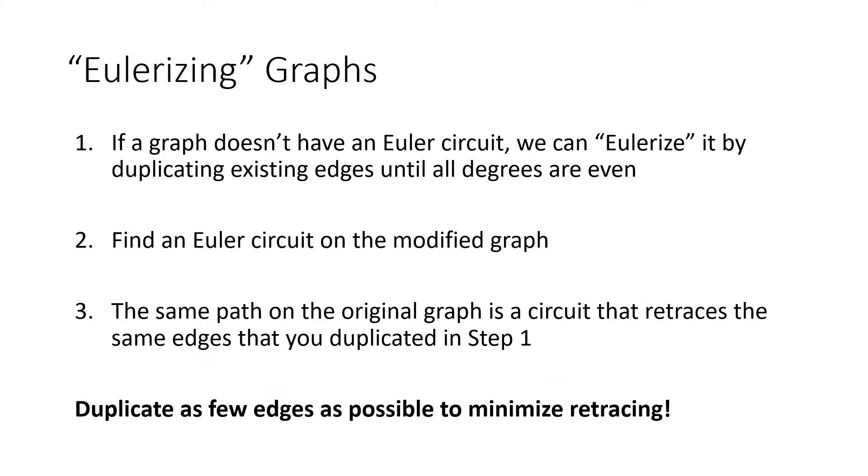So here's the basic process for what I call Eulerizing graphs. If a graph doesn't have an Euler circuit, in other words if it has at least one vertex with an odd degree, we're going to Eulerize it by duplicating existing edges until all of the degrees are even. That new graph will have an Euler circuit, so we find that, and then we take that Euler circuit on the new graph and put it back onto the original graph.